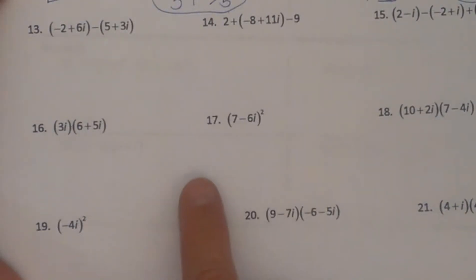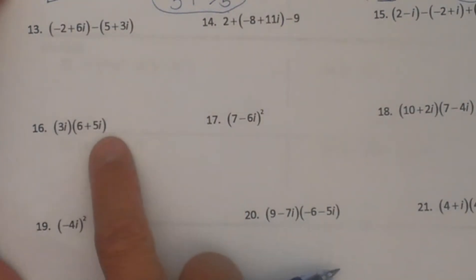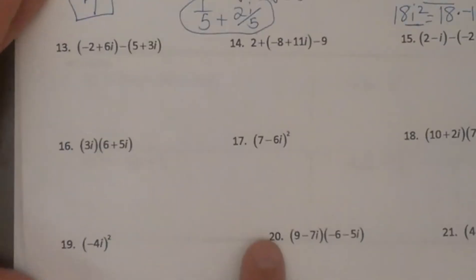Welcome back to MooMooMath. We are going to work on simplifying binomials that contain i, multiplying those together, and then we are going to look at one example of dividing.